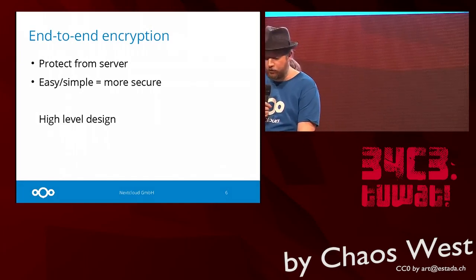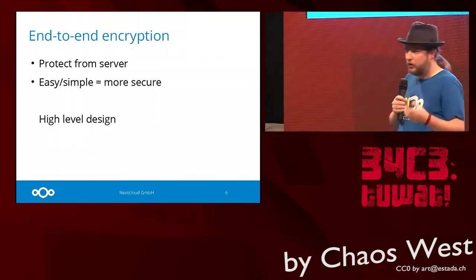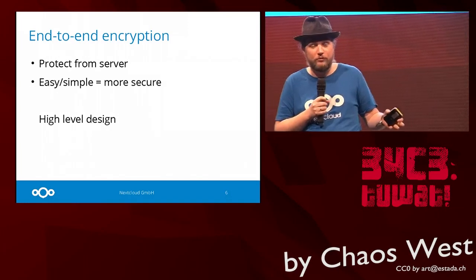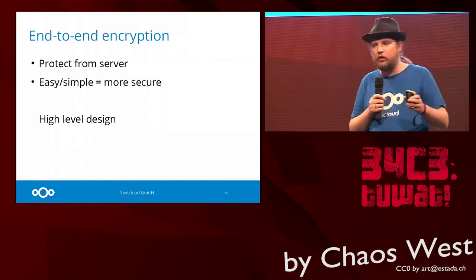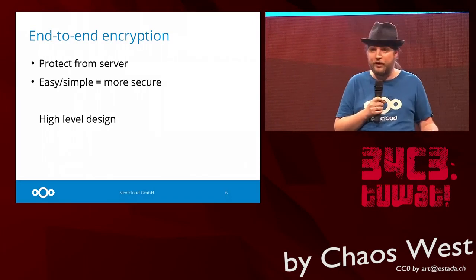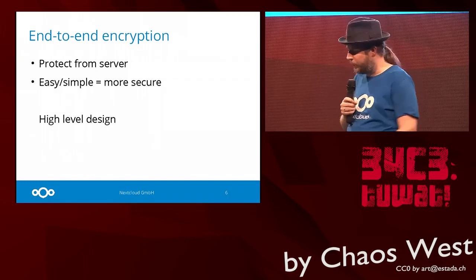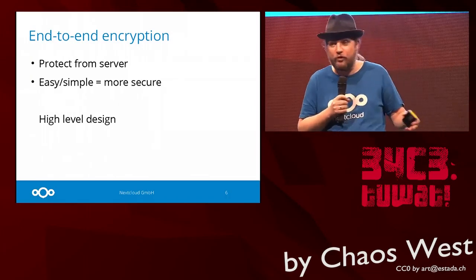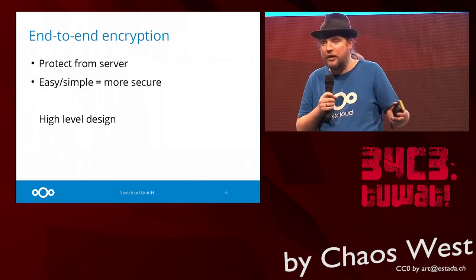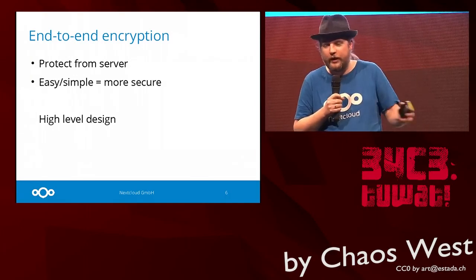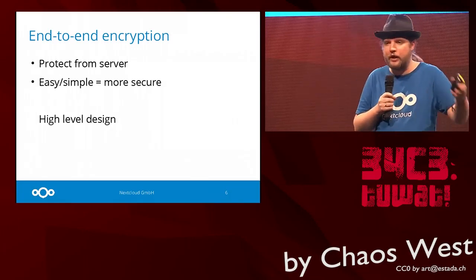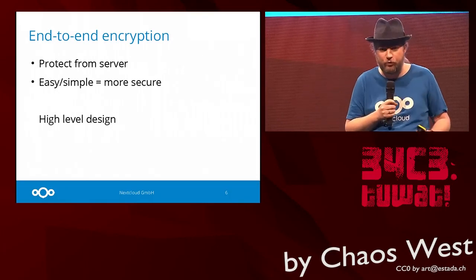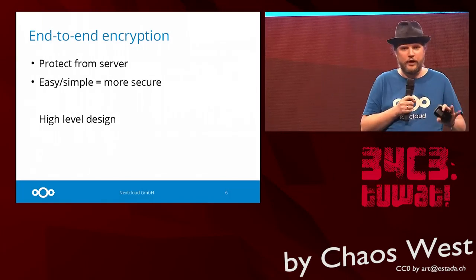The second element really central to end-to-end encryption is ease of use — it should be simple. The biggest issue with security is always the user. It's always the user that's the weakest link. So if it is not easy to use, people are going to make mistakes, and if they make mistakes, the security isn't worth much. As an example, if you let users pick their own password for the end-to-end encryption, they will probably pick the same password they used for Nextcloud in the first place — which is obviously already on the server. So we designed it so that users don't pick their own password. We give them one.